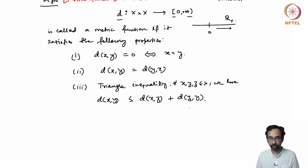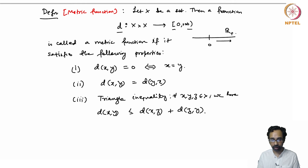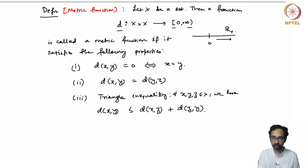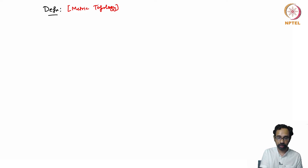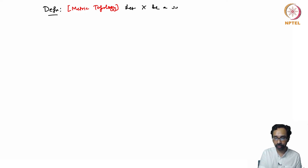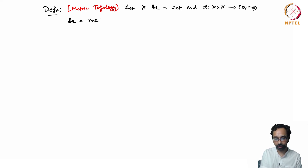Given such a metric function, we can use it to define a topology on the set X, which we shall call the metric topology. So let X be a set and let d: X × X → R⁺ be a metric function on X.